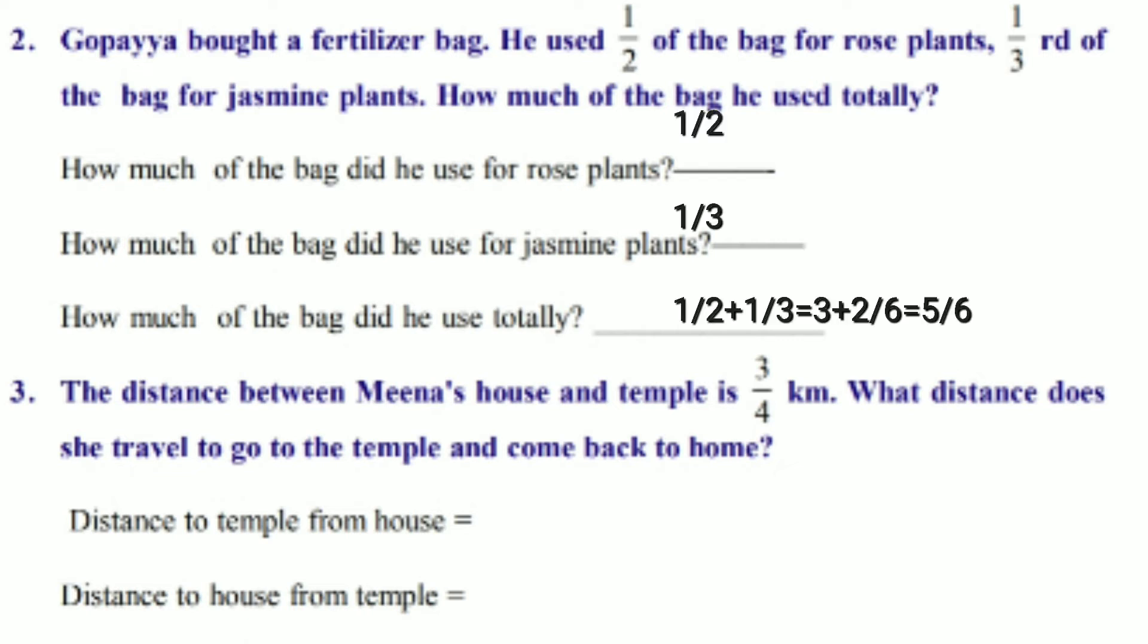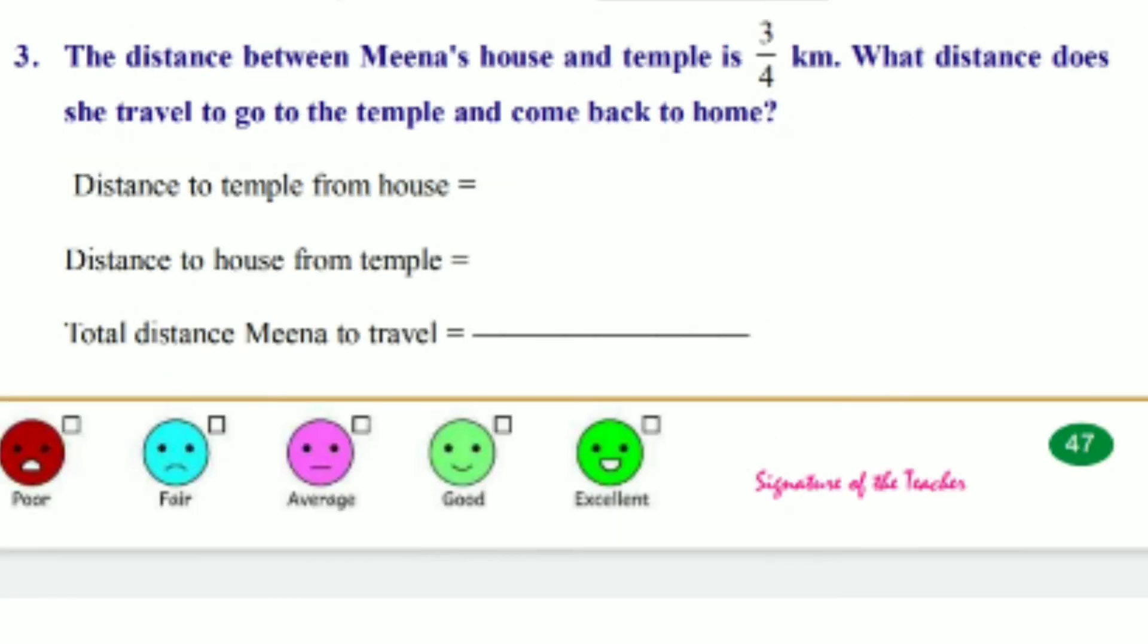How much of the bag did he use for rose plants? 1/2. How much of the bag did he use for jasmine plants? 1/3. How much of the bag did he use totally? 1/2 plus 1/3 is equals to 3 plus 2 by 6 is equals to 5/6.